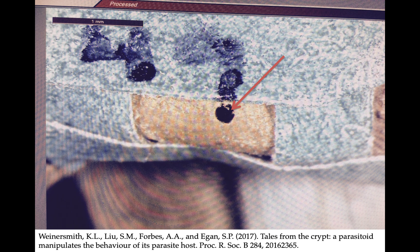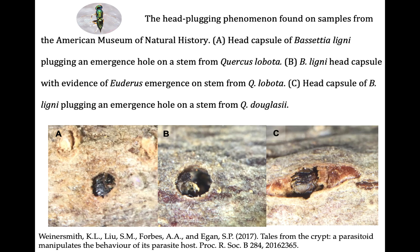Scott Egan went to the American Museum of Natural History and the Smithsonian Institution and noticed that their collections included closely related gall wasp species with their heads plugging emergence holes. This made us wonder if maybe the crypt keeper wasp was attacking other gall wasps in the genus Bicetia, or maybe even more distantly related gall wasps.